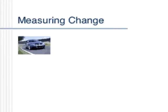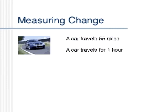Let's take, for example, a moving vehicle. If a car traveled 55 miles, we would say that this is a measure of distance. If a car travels for one hour, we would say that this is a measurement of time. Both are measurements of change.